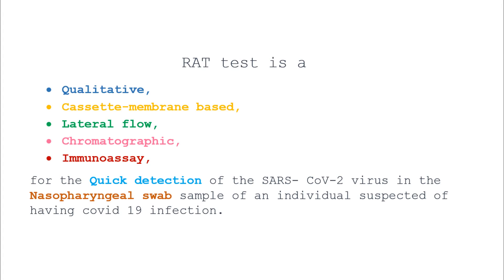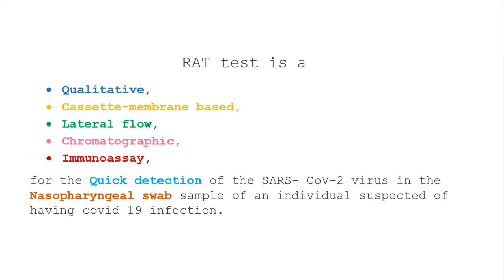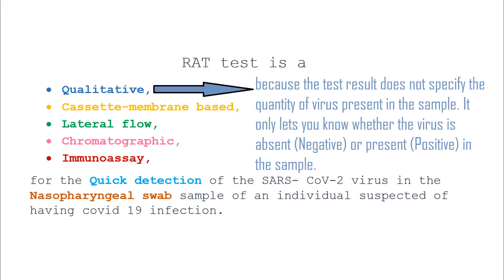The coronavirus or COVID-19 or SARS-CoV-2 rapid antigen test or RAT test is a qualitative cassette membrane based lateral flow chromatographic immunoassay for the quick detection of the SARS-CoV-2 virus in the nasopharyngeal swab sample of an individual suspected of having COVID-19 infection. It is a qualitative test because the test result does not specify the quantity of virus present in the sample — it only lets you know whether the virus is absent or present.